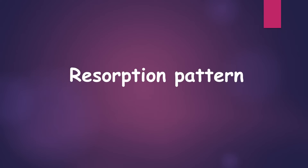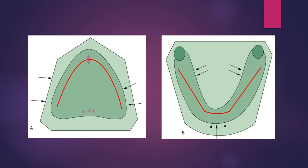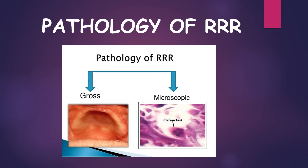The resorption pattern in the maxilla and mandible is quite different. The maxillary ridge resorbs buccally and labially, resulting in a reduced arch size. The mandibular arch resorbs labially anteriorly and lingually posteriorly, resulting in widening of the arch. So while the maxillary arch shows a concomitant reduction in the perimeter or circumference of the arch, the mandibular arch resorbs in a labial and lingual direction resulting in widening of the arch posteriorly.